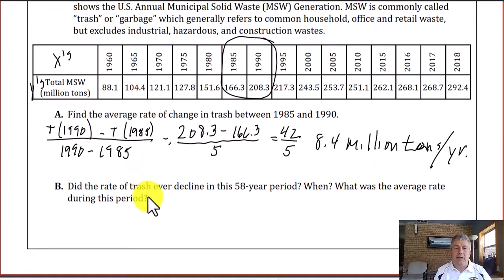And in question B, did the rate of trash ever decline in the 58 year period? When, what was the average rate of change during that period? Well, if we take a look at this 58 year period, did it ever decline? It looks to be ever increasing except between 2005 and 2010 where it dropped from 253.7 millions of tons to 251.1. So we're going to explore this portion of the data set. And we've answered that question when between 2005 and 2010.